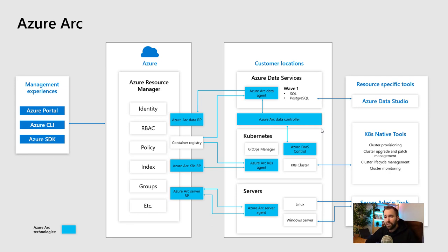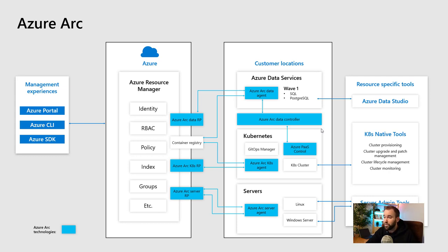Now in blue, you can see everything specific to Azure Arc. We have resource providers plugged into Azure Resource Manager — every service has at least one resource provider. For example, the Azure Arc Server Resource Provider connects to the Azure Arc Agent, which connects back to the Azure Arc Resource Provider. The same pattern happens for Kubernetes clusters. For the data services part, the same thing — but what you also see is that to run Azure data services like Azure SQL or Postgres, what you need is a Kubernetes cluster. So all you need to deploy Azure SQL is actually a Kubernetes cluster. And for all these services, you can still use your own local tools for server administration, Kubernetes administration, and so on.